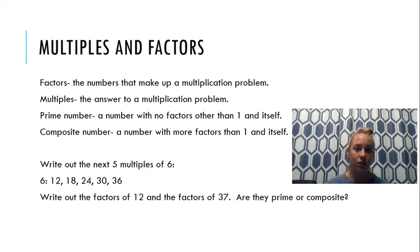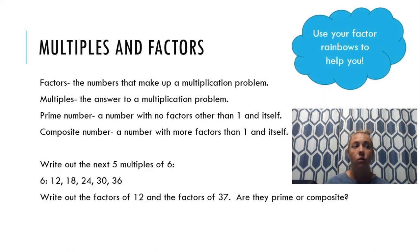Now, if I were asking you to write out all the factors of the number 12 and of the number 37, and then tell me if they are prime or composite, a tip I can give you is to use your factor rainbows to help you. Your factor rainbows are going to help you figure that out. So I'm going to give you some time to write out all the factors of 12 and 37, and hopefully you get the same thing that I got.